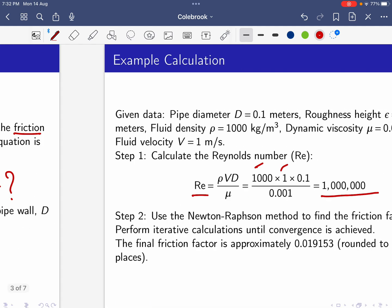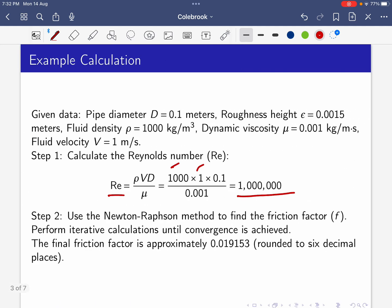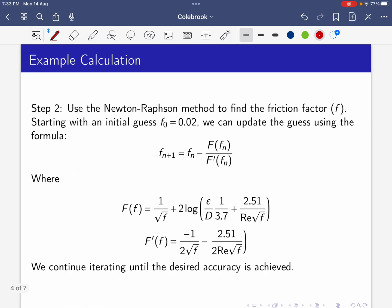Using Newton-Raphson method to find the friction factor, perform iterative calculations until convergence is achieved. The final friction factor is approximately 0.019153 rounded to six decimal places. By using Newton-Raphson method we can get that friction factor.